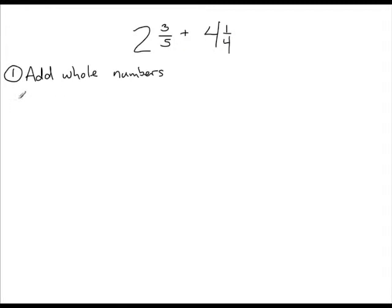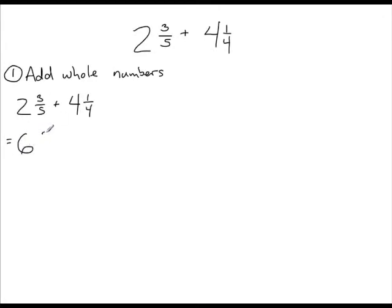Let's start by writing out the question again: 2 and 3 fifths plus 4 and 1 quarter equals... If we add our two whole numbers first, we get 6, since 2 plus 4 is 6, and then we write the fractions after: 3 fifths plus 1 quarter.